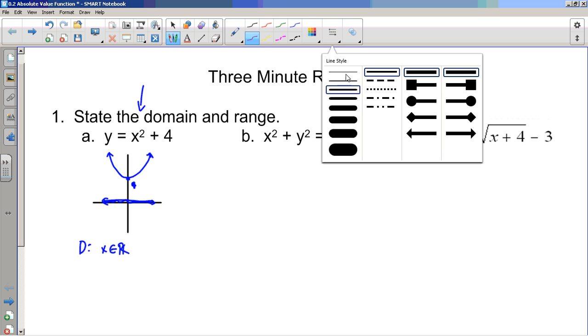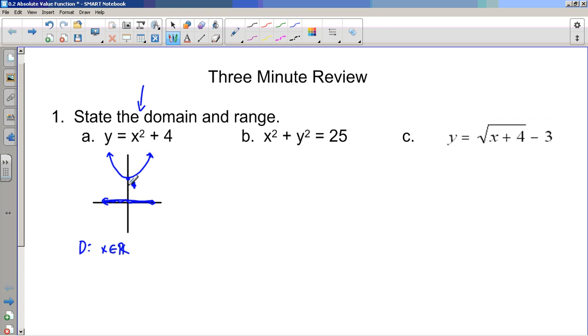So the Domain for a parabola is X can be any real number. Now for the Range, the Range are the output values that are allowed. And notice that if I were to shine a light sideways, what part of the Y-axis would be in shadow? Well, it would just be from here up. And so if I describe those numbers in purple, the Range is Y is a member of the reals, but Y is greater than or equal to 4.